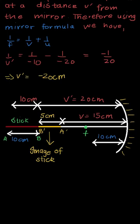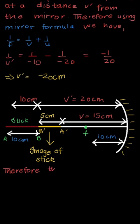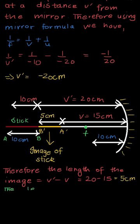Here we have formed a diagram where the image is formed. We found that V' = −20 cm, so the image of B is at 20 cm, and V = −15 cm for point A. Looking at the diagram, this distance is 15 and the total is 20, so the size of the image would be 20 − 15 = 5 cm. Therefore, the length of the image V' − V = 20 − 15 = 5 cm.